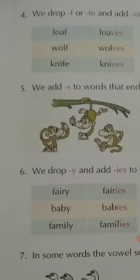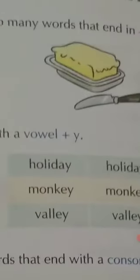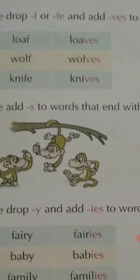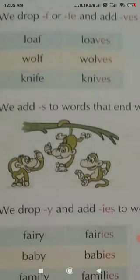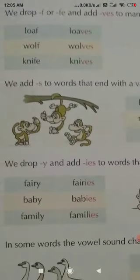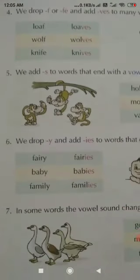Now rule number four: we drop F or FE and add VES to words that end with F or FE. We remove the F or FE and add VES. For example, loaf–loaves, knife–knives. Using these four rules you will be able to make all these words plural.